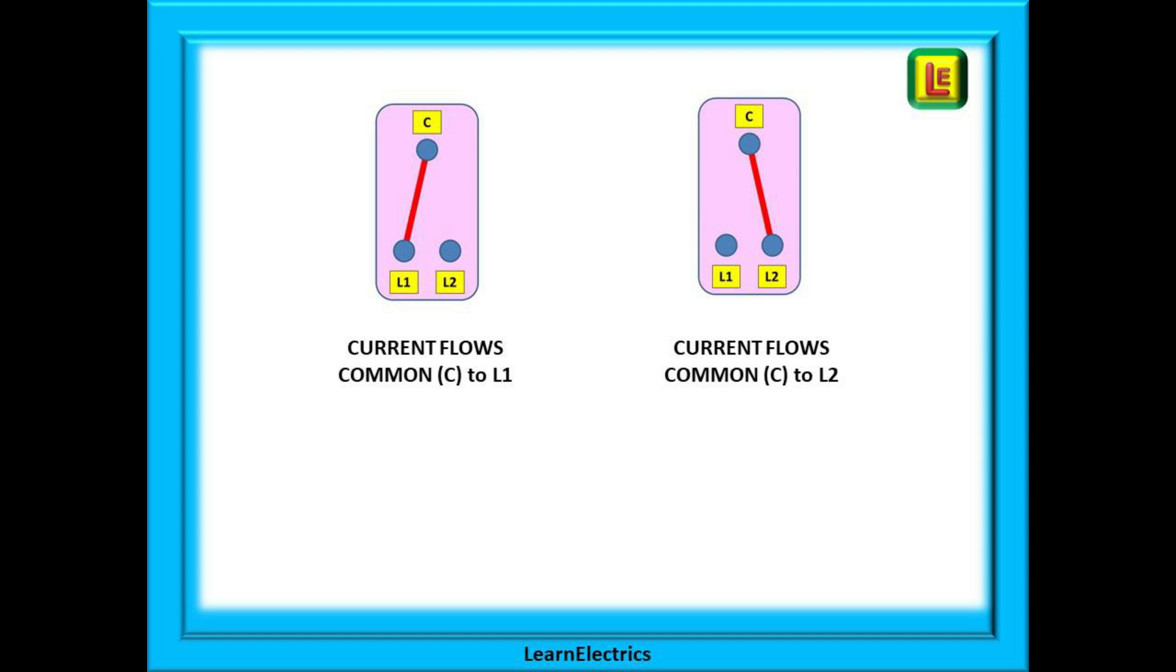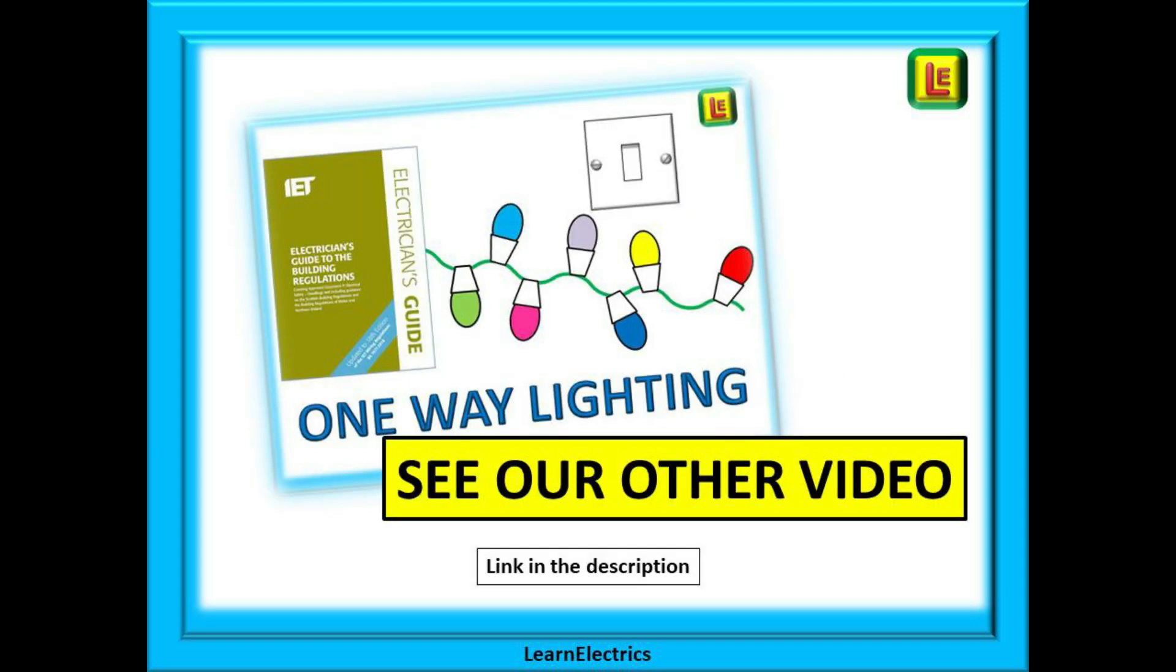Common is always connected. L1 and L2 will change over every time the switch is operated. If you want a fuller description of switches and ceiling roses, please see our other video after watching this one. We've left a link to one-way lighting in the description to this video.